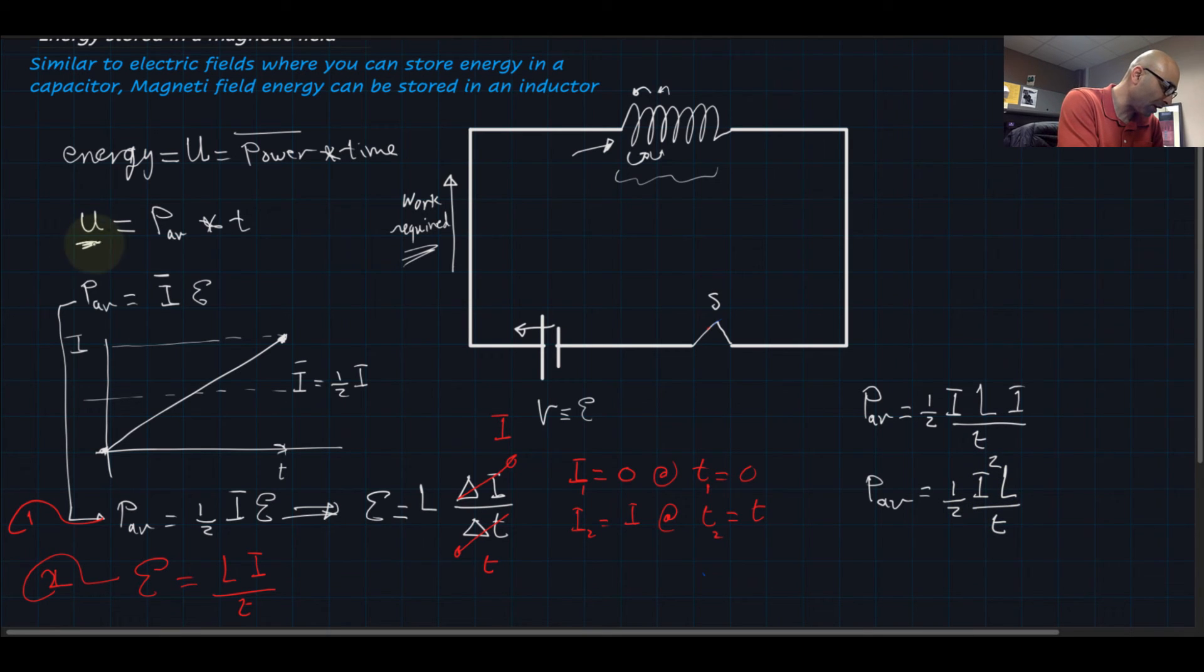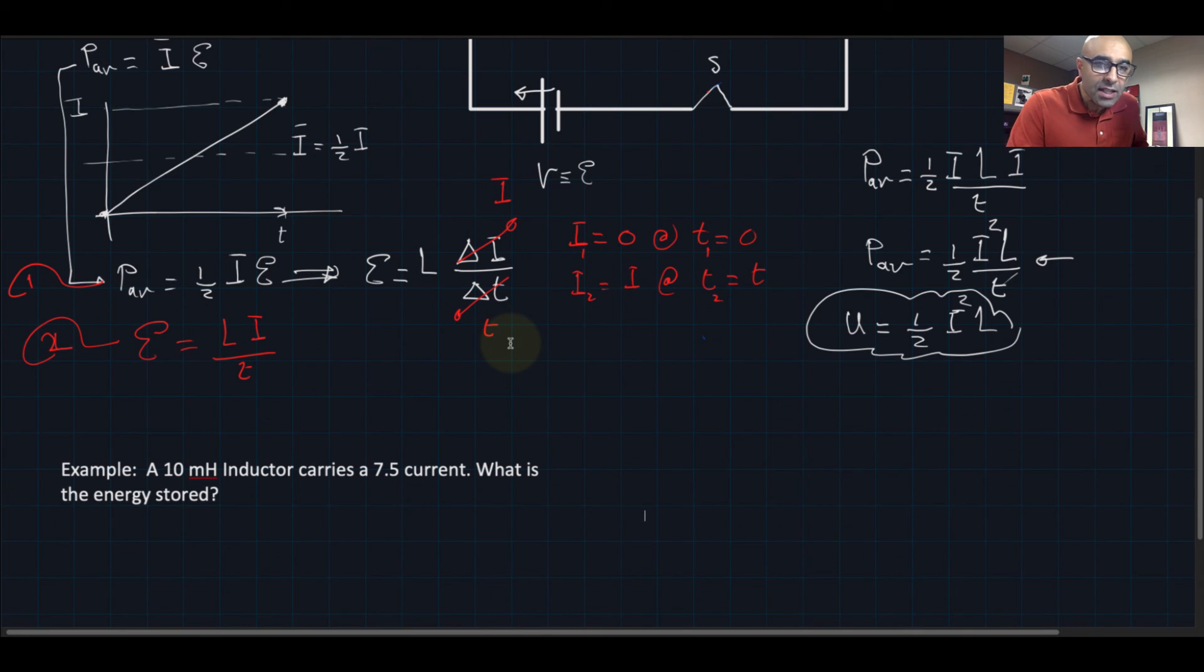So now if I want to find U, which is the energy, it's equal to P average times T. P average is this quantity, and times T, so T with T goes away, so you end up with one half I squared L. And that's the equation we are looking for.